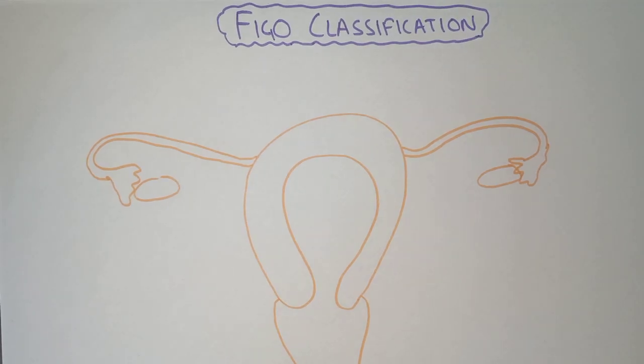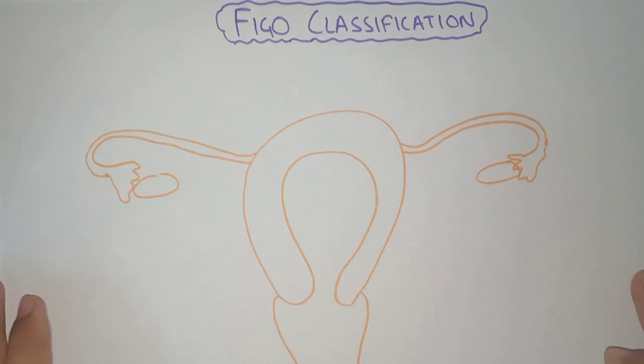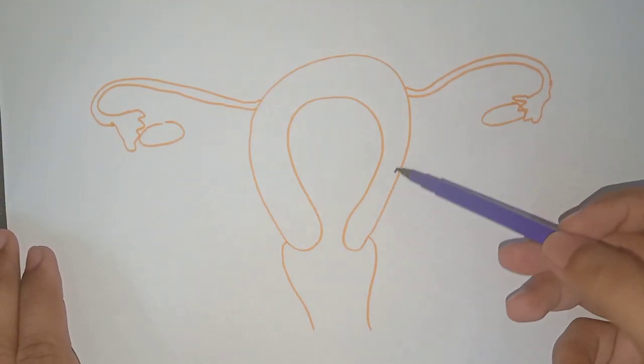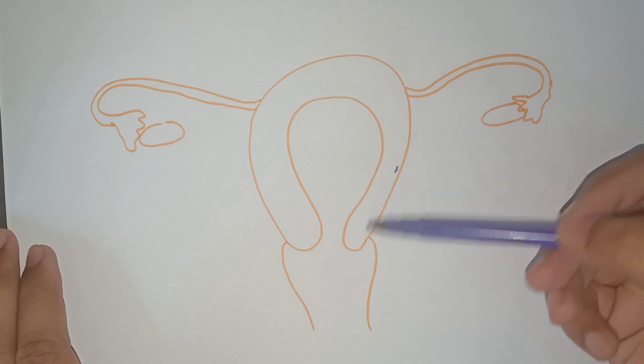Hello everyone, welcome to MBCGS.com. In this video we are going to discuss the FIGO classification of fibroids. This is a very important classification. Let me draw a diagram - suppose this is the uterus,